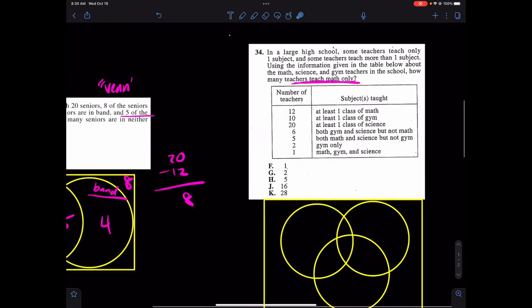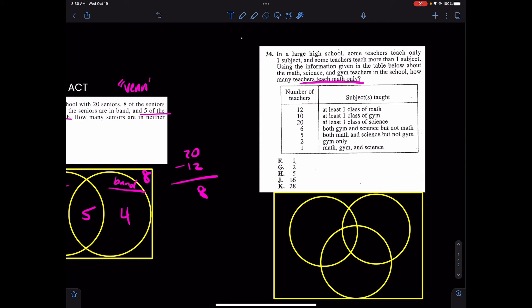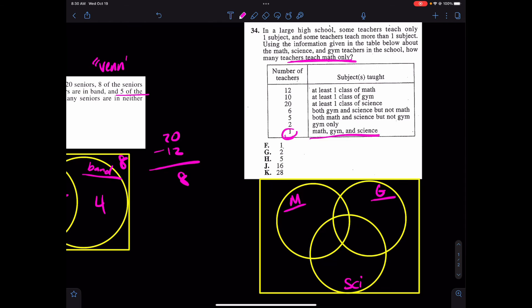In that case, come down here to my nice little Venn diagram on the right hand side. How would I do a question like this? Well, first of all, understand that this piece is probably where I want to start. This is math, this is gym, and this is science. In that case, there's one person in the middle, two in gym only, so two in gym only would be there. Five in both math and science but not gym, so five would be here. Six in both gym and science but not math. Gym and science but not math, so that's six.